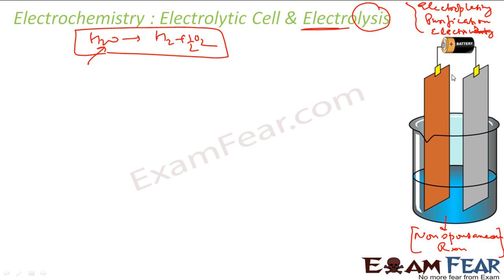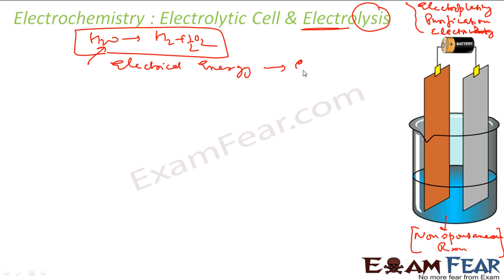In the process of electrolysis, what is happening is the electrical energy of the battery or whatever power you are adding is changed into chemical energy. Electrical energy is changed into chemical energy.